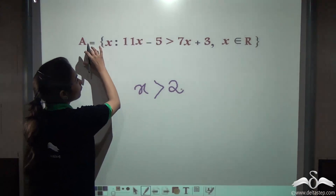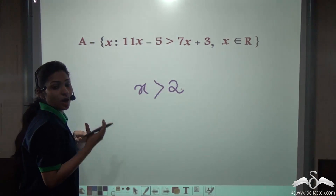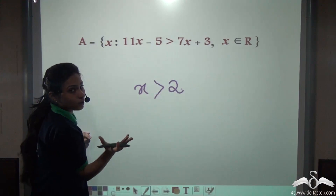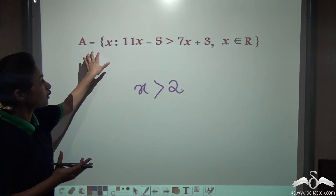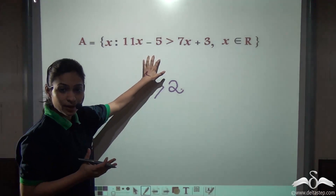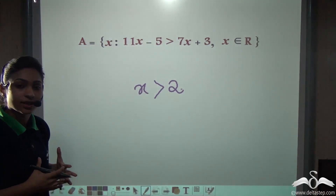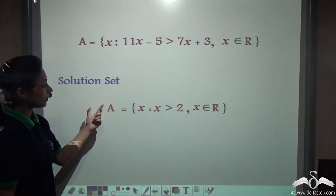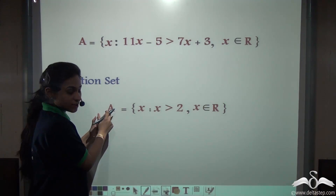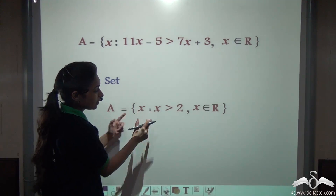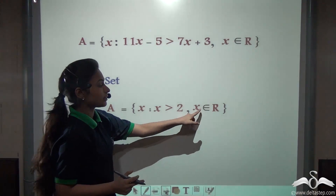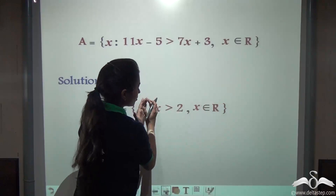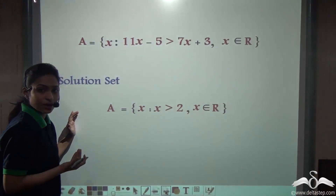So for this inequation, how will you write the solution set? When the question is in set builder form, you need to write the solution set also in set builder form. You will write it as: the solution set for A is x such that x is greater than 2 and x belongs to real numbers. The same thing is just represented in set builder form.